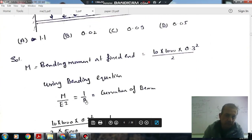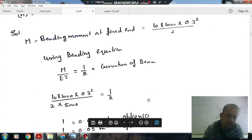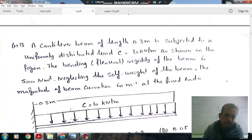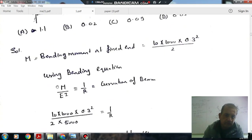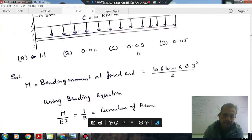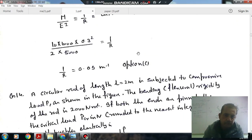Now using the bending equation, we can find out curvature of the beam. The bending equation is M by I equals E by R. 1 by R is the curvature of beam. We have M, we have EI. EI is given 5000 Nm square. So 1 by R is 0.09 meter inverse. This is the curvature, so option C is the right answer.